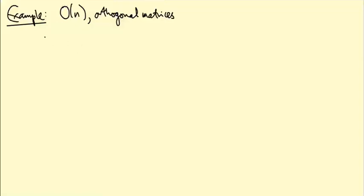I want to do some examples for you of calculating the Lie algebra of a Lie group, and I'm going to start with the example of O(n), the group of n by n orthogonal matrices.